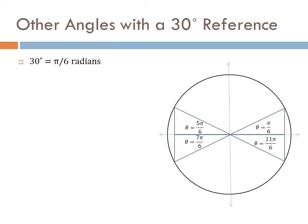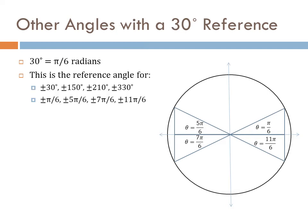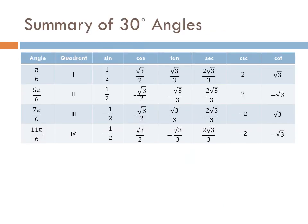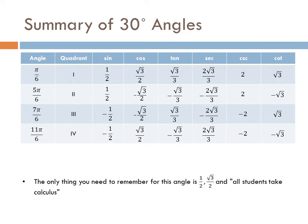Let's place the 30 degree angle into the unit circle. 30 degrees is pi over 6 radians. The x value (cosine) is √3/2. The y value (sine) is 1/2. The tangent is sine over cosine, which is the square root of 3 over 3. The cosecant is 1 over the sine, which is 2. The secant is 1 over the cosine, which is 2√3/3. The cotangent is the square root of 3. The reference angle pi over 6 applies to ±30°, ±150°, ±210°, ±330° and in radians ±pi/6, ±5pi/6, ±7pi/6, ±11pi/6. The only things to remember are 1/2, √3/2, and 'all students take calculus.'